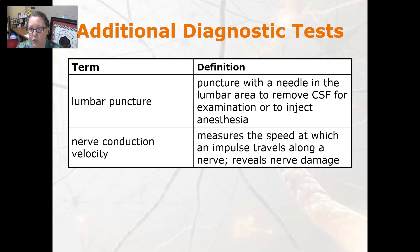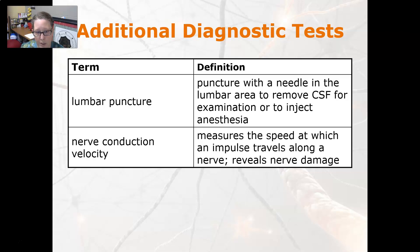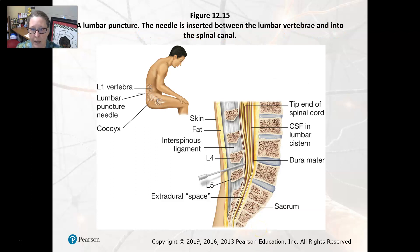A lumbar puncture is a puncture with a needle in the lumbar area to remove spinal fluid for examination or to inject anesthesia. Nerve conduction velocity measures the speed at which an impulse travels along the nerve and reveals nerve damage. This next illustration shows a lumbar puncture.